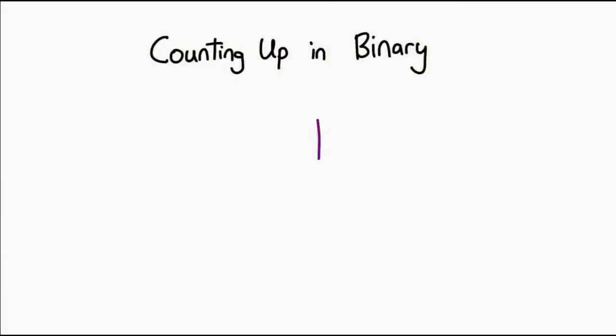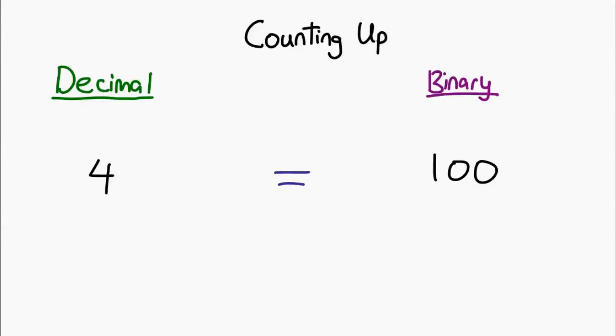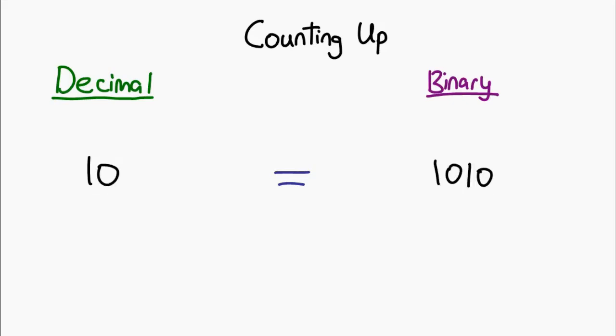Extend this concept to every digit — basically every digit is a counter of the number of overflows of the digit before it. In binary, the same concept holds. Every single digit can only be 0 or 1, so overflows happen all the time. You start off with 0, then 1, and when you want to increment further, it overflows and you get 1 0. What you're seeing on screen right now is counting up decimal numbers and binary numbers simultaneously, and both representations represent the exact same value.